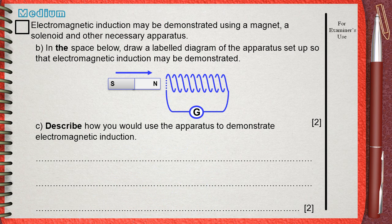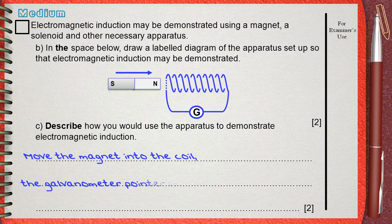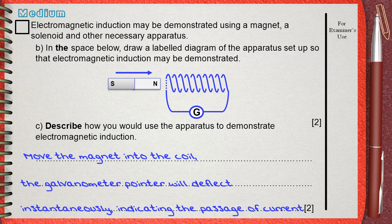Simply moving the magnet into the solenoid and then withdraw it out of the solenoid, this will produce an electric current. So we can say, move the magnet into the coil. The galvanometer pointer will deflect instantaneously, indicating the passage of the current.